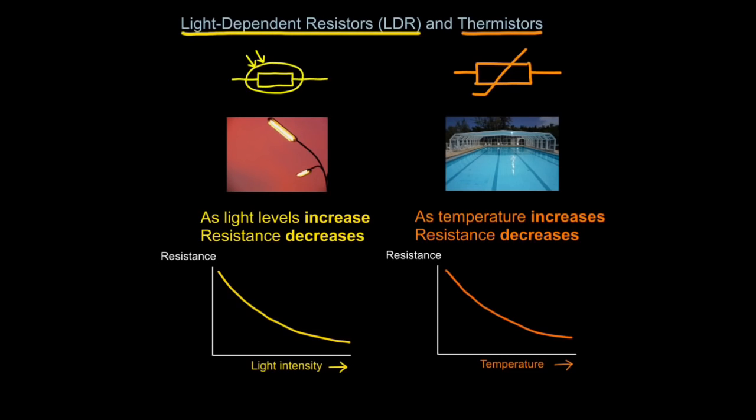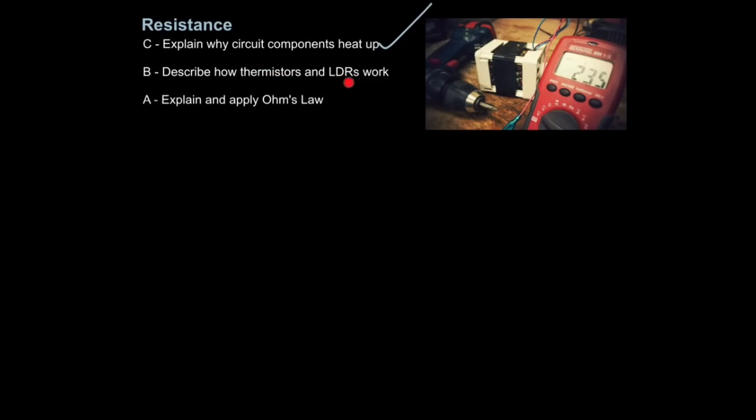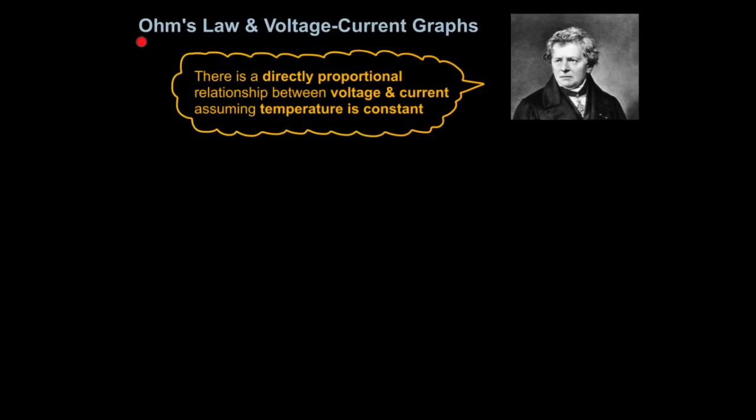To give you an idea, this isn't exactly how they work, but imagine you had a circuit which suddenly it got dark and the resistance increased. You can imagine the electrons now get redirected to another circuit to switch the light on. And that is how you describe how thermistors and LDRs work.